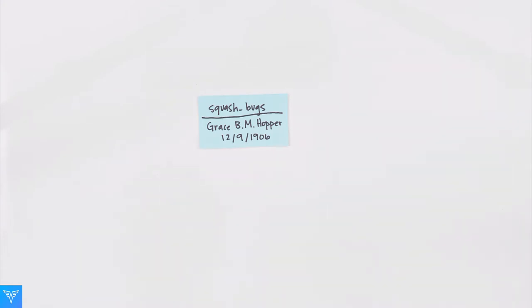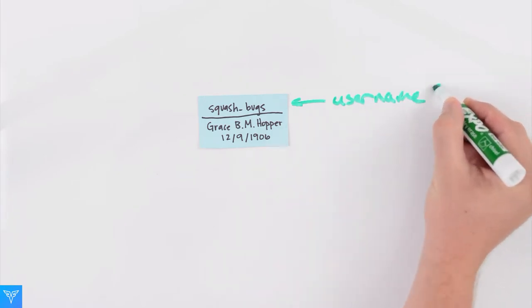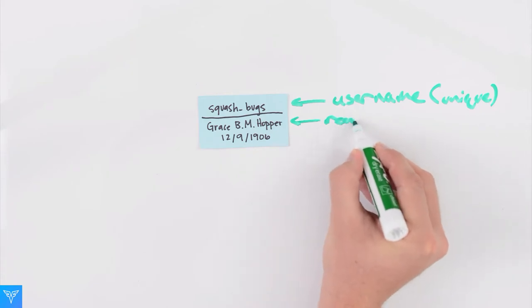To give a concrete example, let's say we wanted to store information on Codefights users. This card shows the information we want to store. Here we have the username and maybe we include some other information such as the user's real name and the date she joined Codefights.